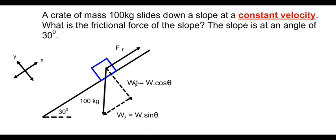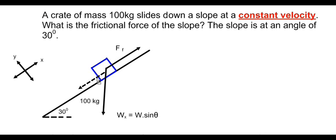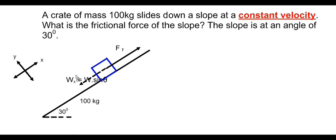The object slides down the slope because of the x-component of weight, which is w_x. The weight pulling downwards — basically, the object slides down the slope because of w sine theta.